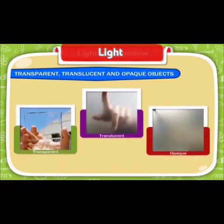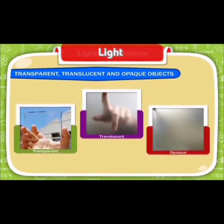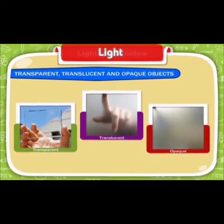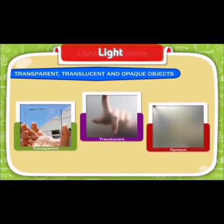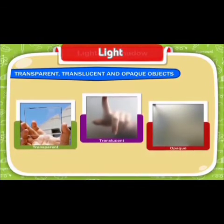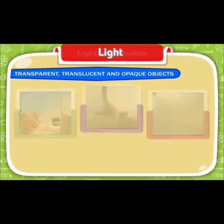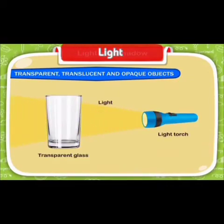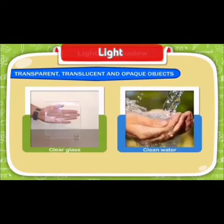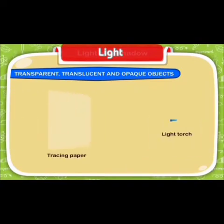When light falls on an object, it can have one of three effects. Objects are classified as transparent, translucent, or opaque. Objects that allow light to pass through them completely are called transparent objects. For example, clear glass and clean water are transparent objects.